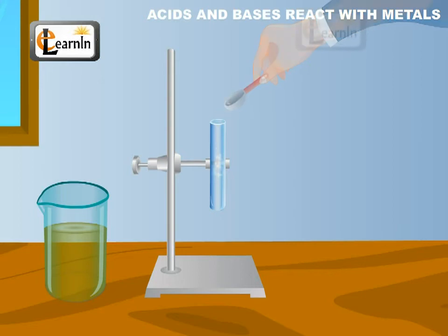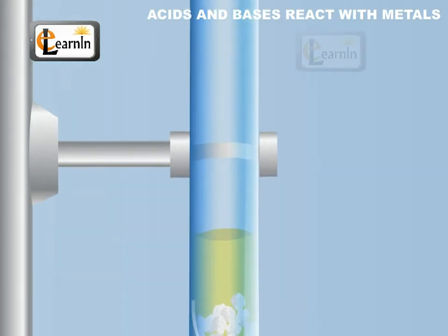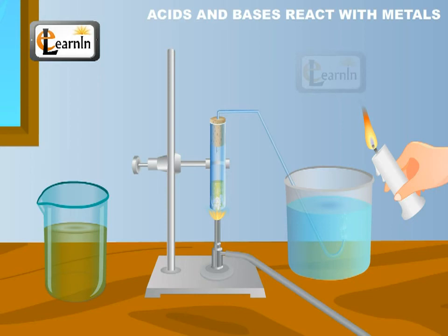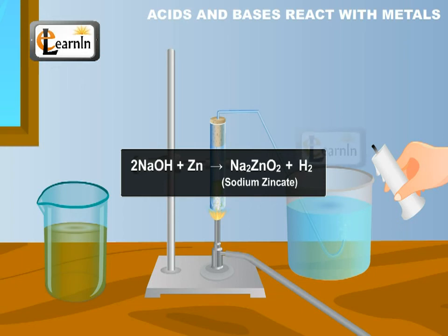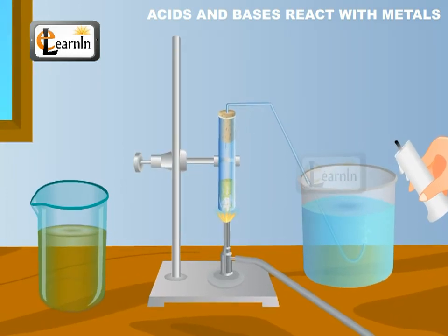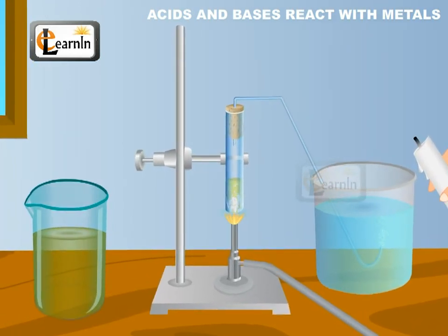Now let's perform another activity. Place a few granules of the same metal in a test tube, add around two milliliters of sodium hydroxide solution, and warm the contents of the test tube. Repeat the same observation steps. The reaction that takes place is: sodium hydroxide plus zinc equals sodium zincate plus hydrogen, or 2NaOH + Zn = Na2ZnO2 + H2. As before, hydrogen is found in the reaction.